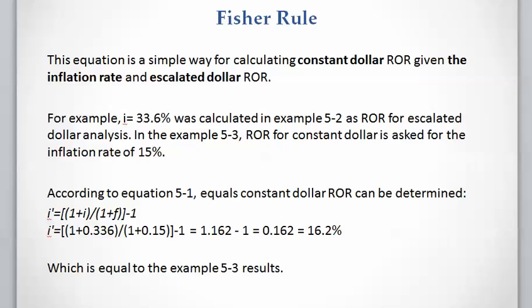Using this equation, we can simply calculate the constant dollar rate of return given the inflation rate and the escalated dollar rate of return. We calculated the escalated dollar rate of return as 33.6% and considered a 15% inflation rate. Knowing these two values, and using the Fischer rule, we plug in I and F and calculate I prime — the constant dollar rate of return — as 16.2%, which is exactly the same as what we calculated directly for the constant dollar rate of return.